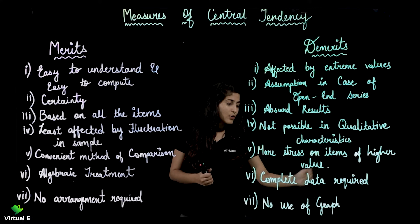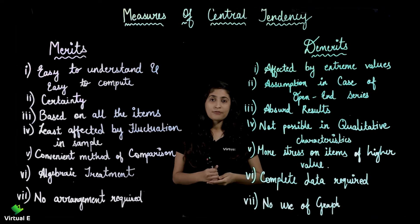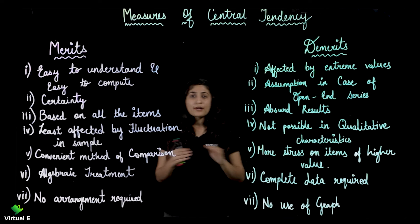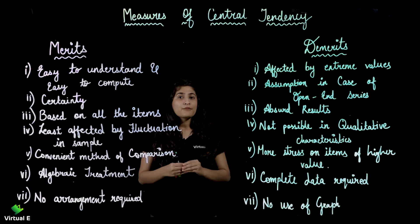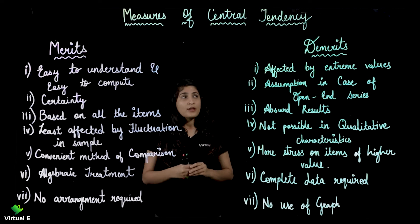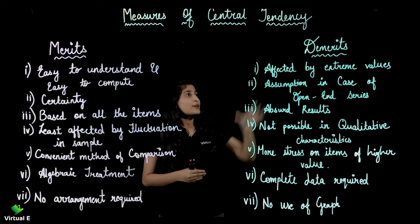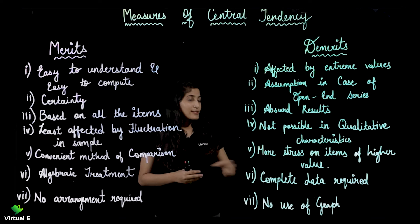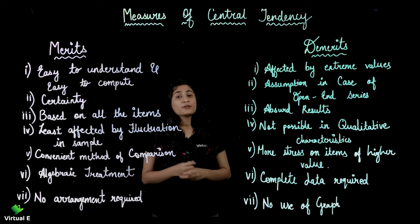The next demerit is no use of graph. In mean, there is no use of a graph anywhere. That's it — we are done with the demerits and merits of mean.